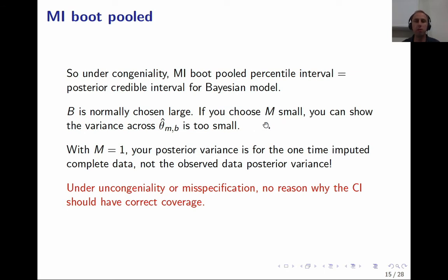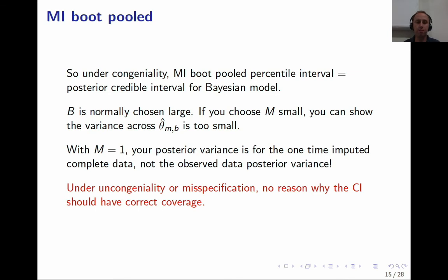If you choose M small to keep computational cost feasible, you can actually show that the variance of the pooled theta_{m,b} estimates is too small. If you chose M=1 — imputing the missing data once and bootstrapping that single imputed dataset — the posterior variance being estimated is that for the complete data conditional on that imputed data, not the full posterior. Under uncongeniality or misspecification there's no reason to expect correct coverage, but under congeniality and correct specification, as long as both B and M are large, we would expect things to be okay.